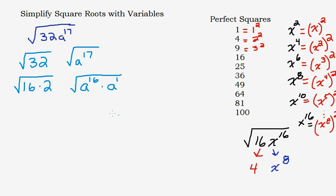When you have 32, you divide by 16; when you have exponent 17, you just remove one factor of a to make the exponent even — giving a to the first times a to the sixteenth. Now we can take square roots: the square root of 16 is 4, and the square root of a to the sixteenth is a to the eighth. Those come out from under the square root, while the 2 and the a remain inside.